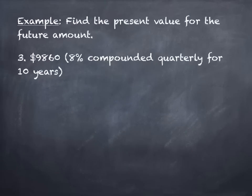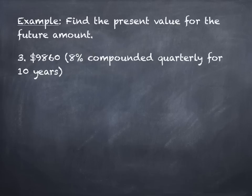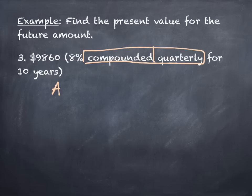This next problem says 'find the present value for a future amount' — this is like working backwards. You go to the bank and find your account has $9,860, and you want to know how much your parents put in 10 years ago when they started it. The word 'compounded' in the problem tells you to use the compound interest formula.